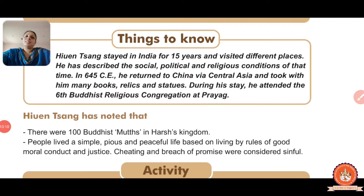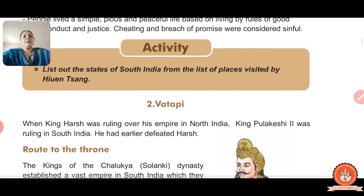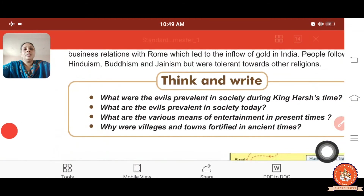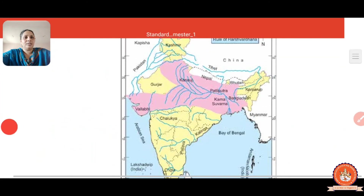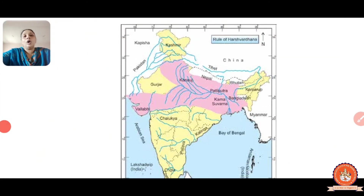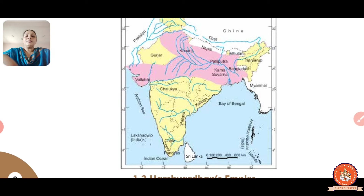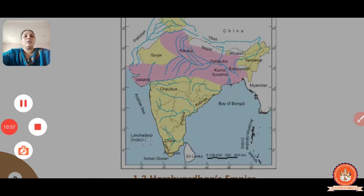Every piece of information about Kanauj under Harshvardhana is now completed. Now we will start the second part of this lesson - Vatapi. The name of the lesson is 'Two Big States.' The first is Kanauj and the second is Vatapi. The king of Vatapi is Pulakesi II. In the picture shown, Harshvardhana is situated in the north part and the kingdom of Pulakesi II is in the south.